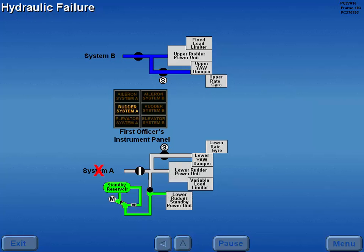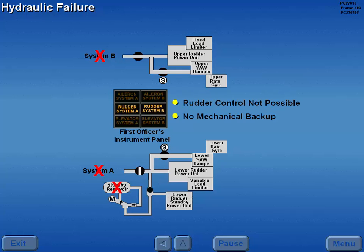If hydraulic systems A, B, and standby fail, rudder control is not possible and no mechanical backup is available.